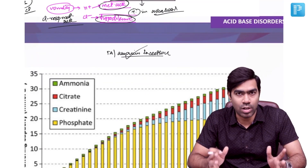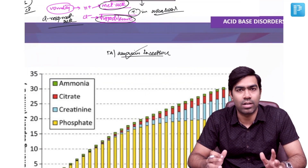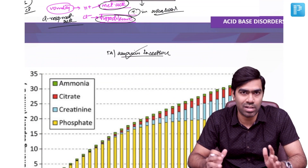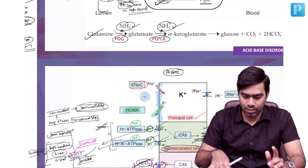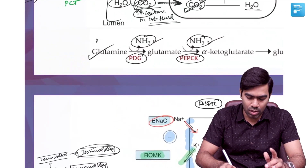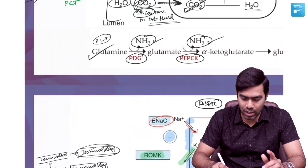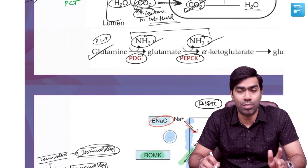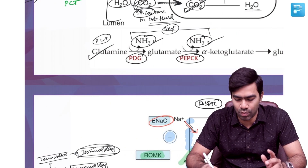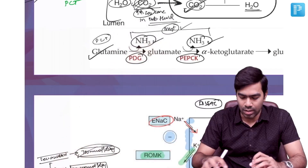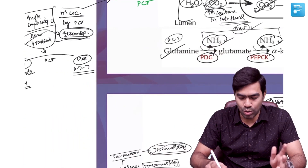The next concept is ammonium excretion — how ammonia is produced and how ammonium excretion has implications in the correction of metabolic acidosis. Ammonium is produced in the PCT. Writing ammonia in the form of NH3 in the human body is incorrect because at a physiological pH of 7.4, it will exist as ammonium only, as implied by the Henderson-Hasselbalch equation.